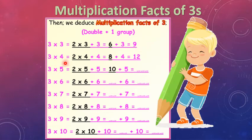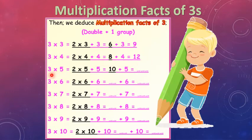For 3 × 4, it means 3 groups, each group has 4 elements. We double these groups and add 1 group: 2 × 4 plus 4, which is 8 plus 4 equals 12. For 3 × 5, it means 3 groups, each group has 5 elements. We double and add 1 group, which is 5: 2 × 5 equals 10, plus 5 equals 15.